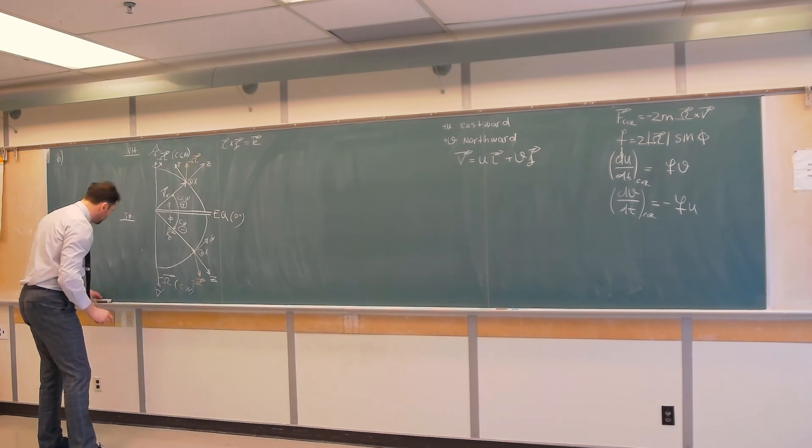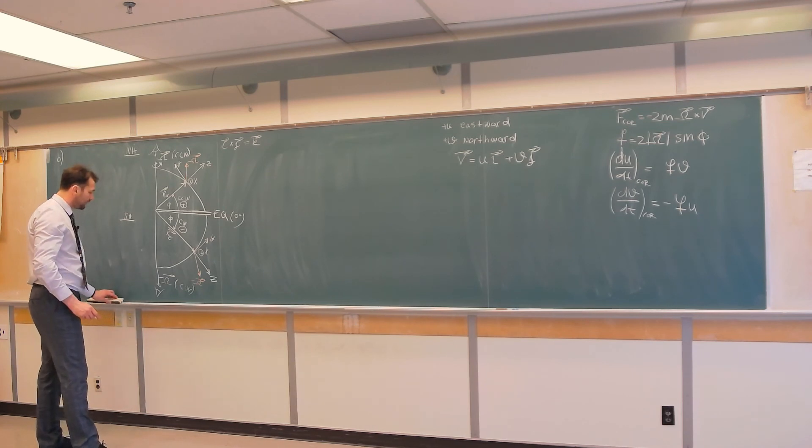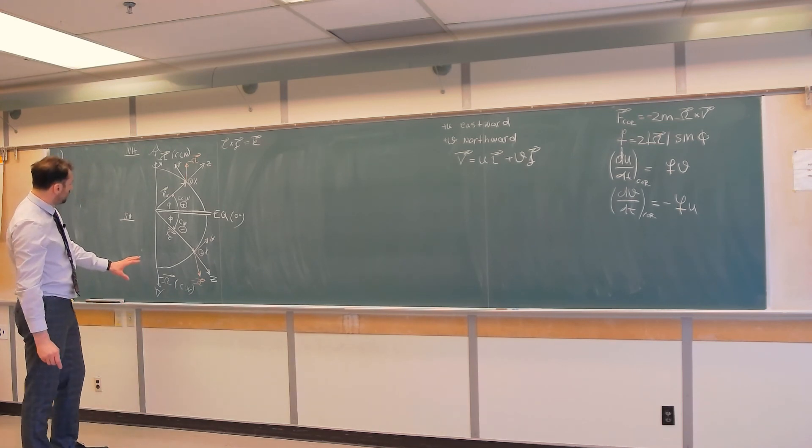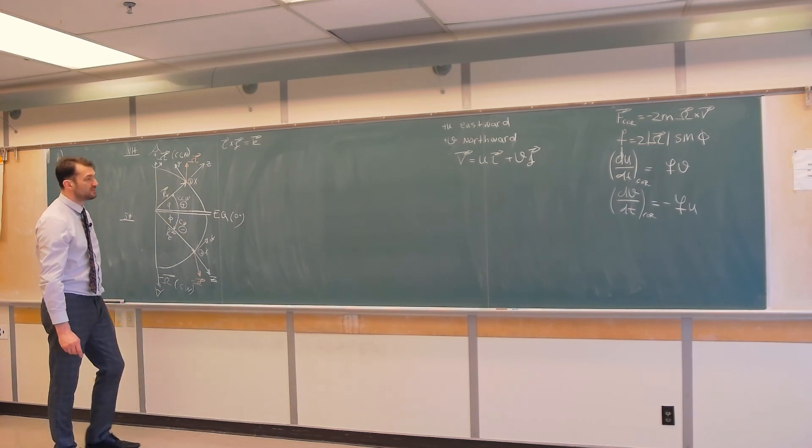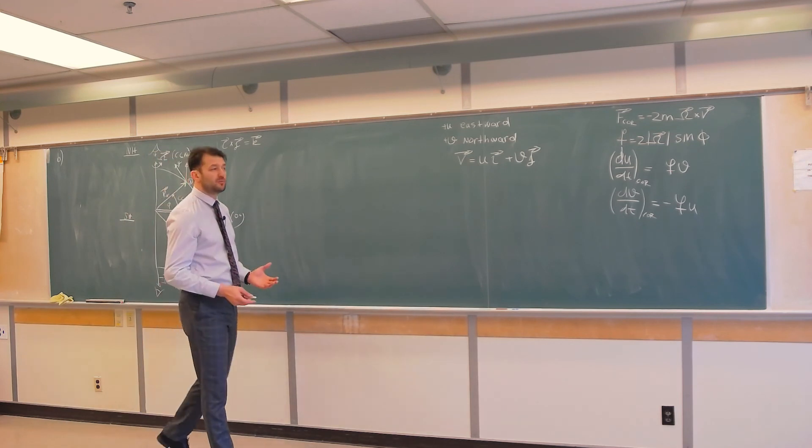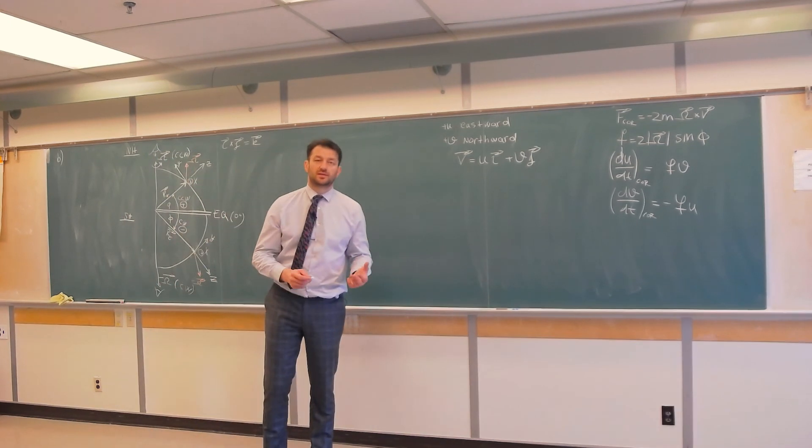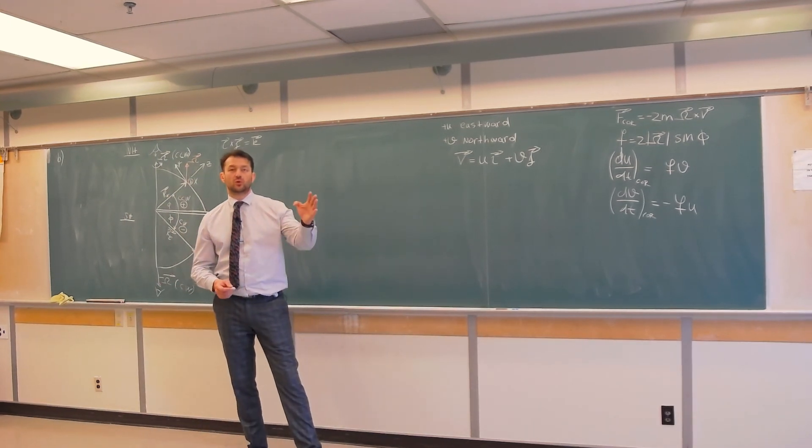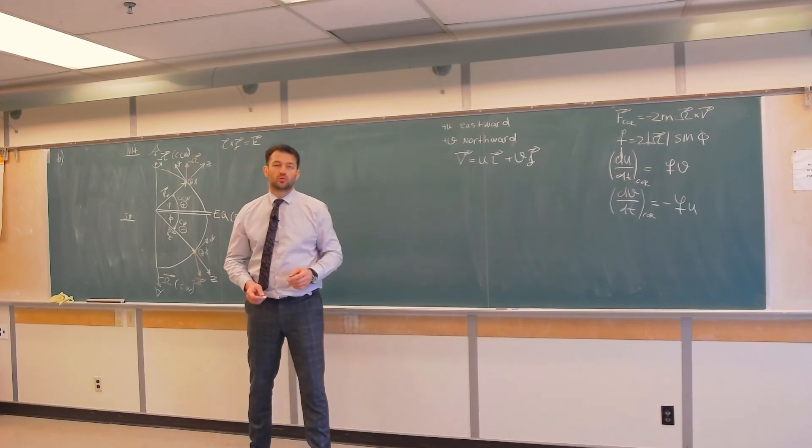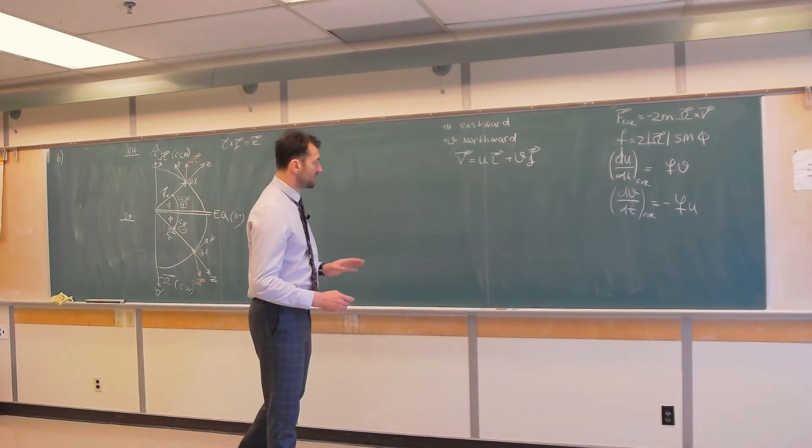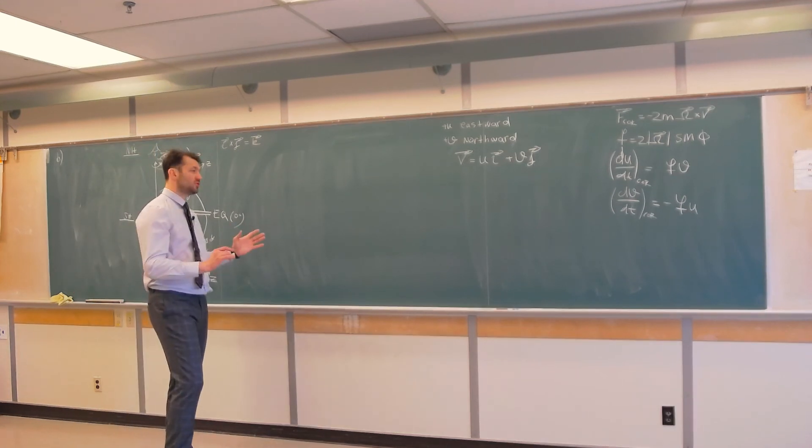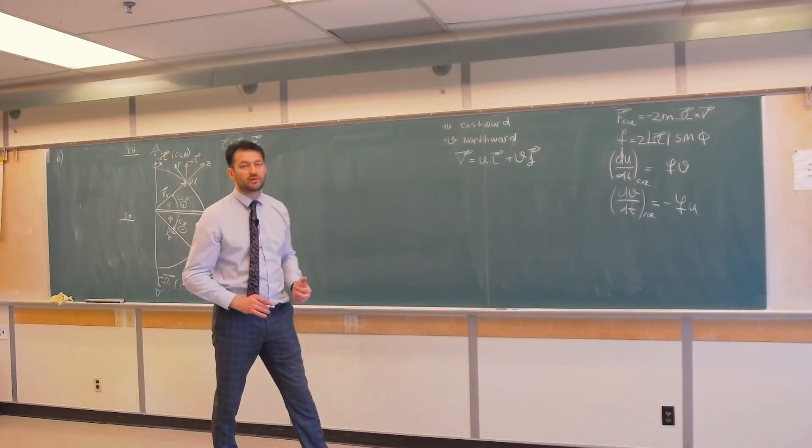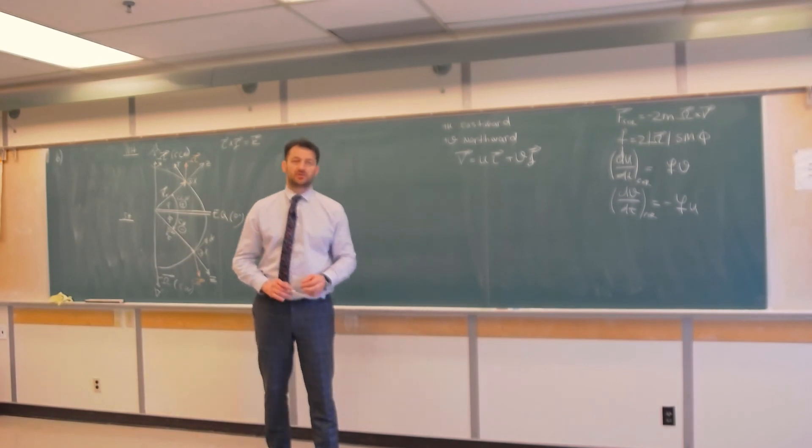So, this difference between sense of rotation between southern hemisphere and northern hemisphere results in Coriolis force having different action on moving objects in these two hemispheres. The intensity is the same, but deflection is towards the right in the northern hemisphere and towards the left in the southern hemisphere.